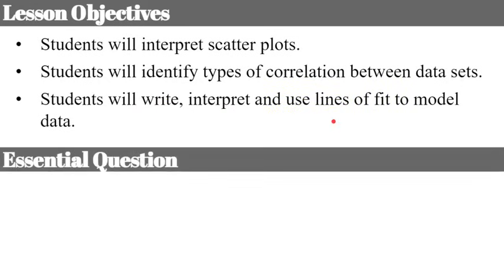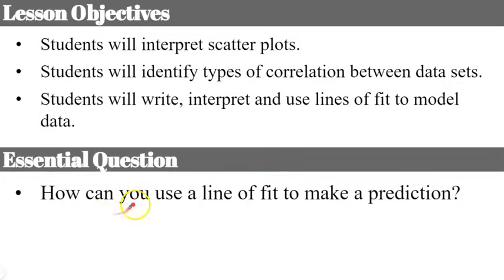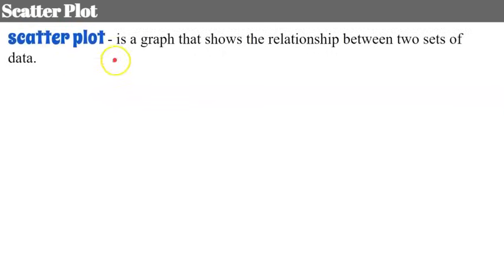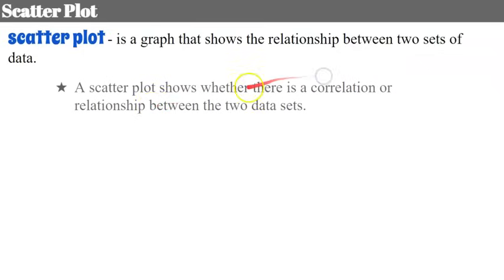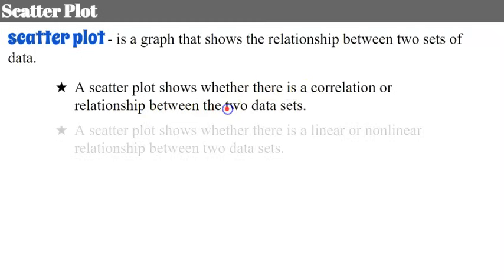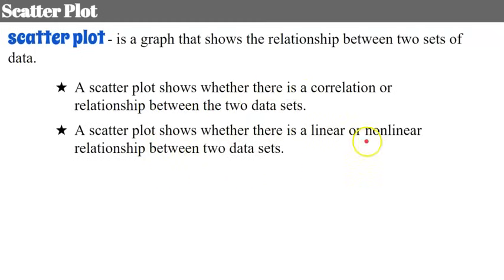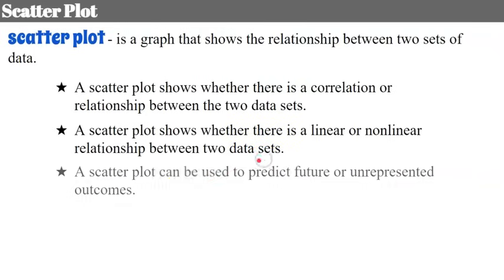Here's what I'd like you thinking about today: how can you use a line of fit to make a prediction? By definition, a scatter plot is a graph that shows the relationship between two sets of data. It shows whether there is a correlation or relationship, whether it is linear or nonlinear, and it can be used to predict future or unrepresented outcomes.